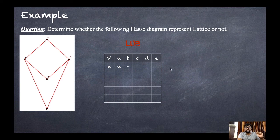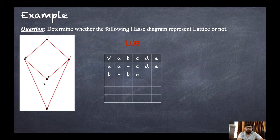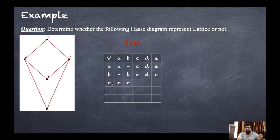LUB of a and c is c, a and d is d, a and e is e. For b and a it is dash. LUB of b and b is b, b and c is c, b and d is d, b and e is e. For c and a it is c, c and b is c, c and c is c.